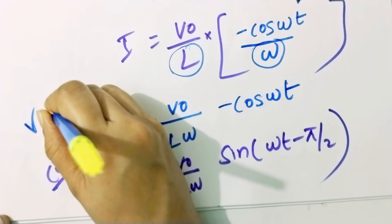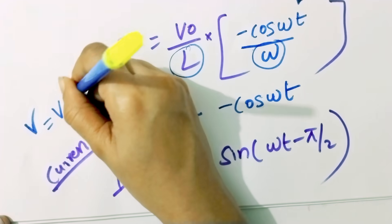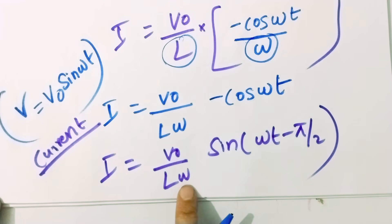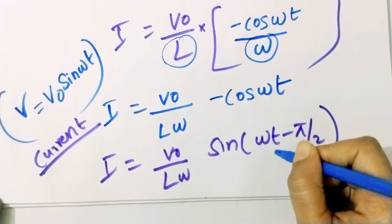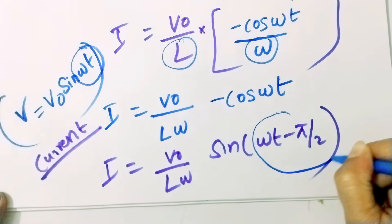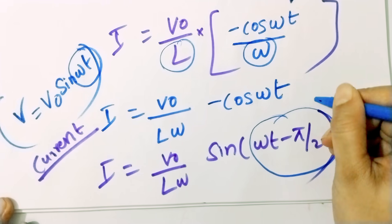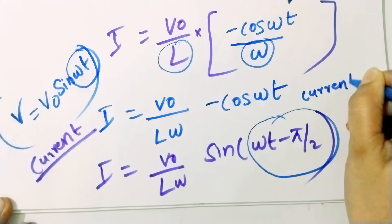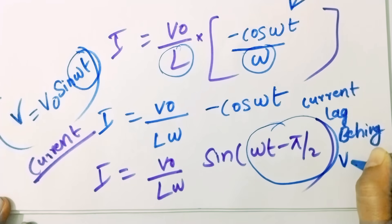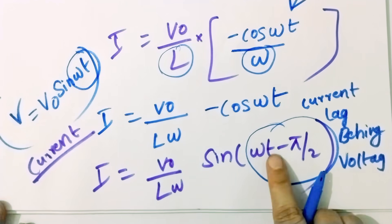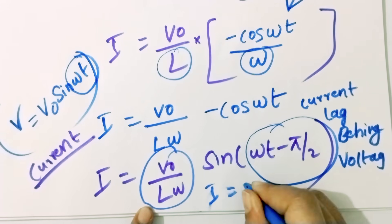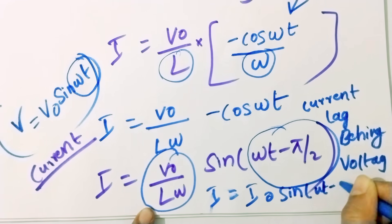The applied voltage is V0 sin(ωt). The current is V0/(Lω) times sin(ωt minus π/2). So the current lags behind the voltage by an angle π/2. This confirms that in a purely inductive circuit, the current lags the voltage by π/2.